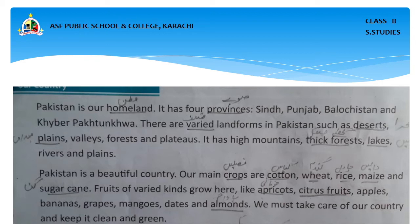There are various landforms in Pakistan — different types of land such as deserts, plains, valleys, and forests. There are also high mountains, thick forests, lakes, and rivers.